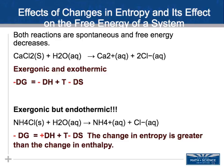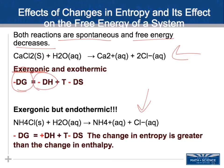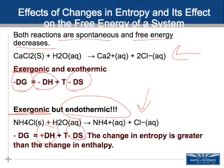Looking at a couple of examples: calcium chloride and water — both reactions are spontaneous with decreasing free energy. The first is exergonic and also exothermic — a negative change in enthalpy. For the second example with nitrogen and chloride: it's an exergonic reaction but endothermic — it absorbs heat. The enthalpy change is positive, but the entropy change is greater, so there is still a negative change in overall energy.